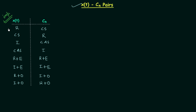We have already seen the proof of the first two pairs, and in this presentation I will prove two more pairs. The first case we will prove is when cn is imaginary plus even, then xt is also imaginary plus even.